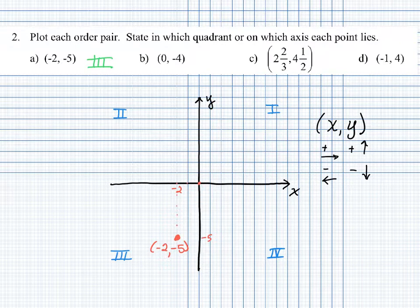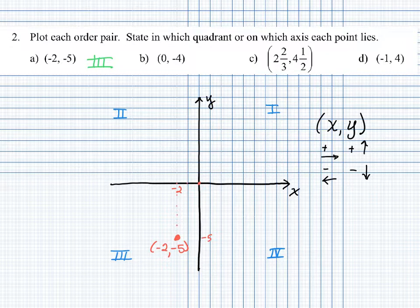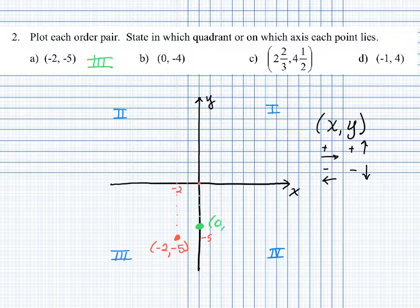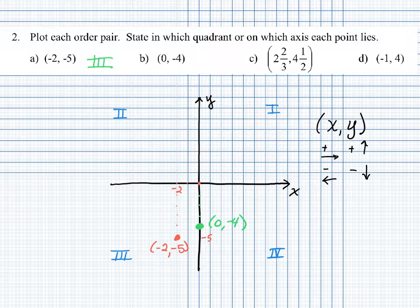For part B, we're looking at the point with coordinates zero, negative four. That's zero units in the x direction and four units down in the y direction. This point has coordinates zero, negative four, and does not lie in any of the quadrants — this point lies on the y-axis.